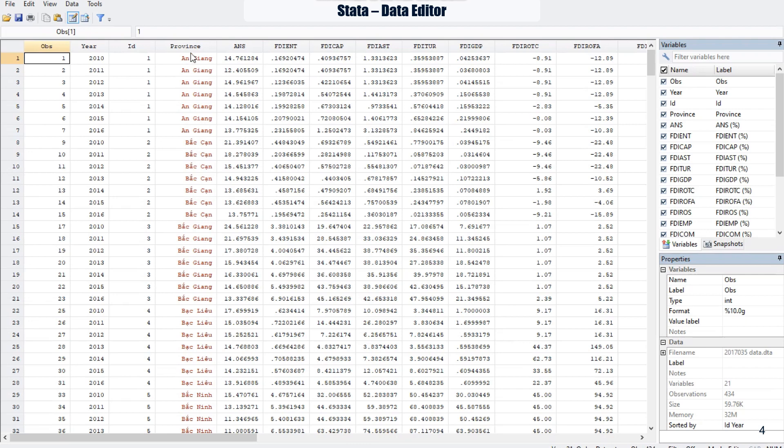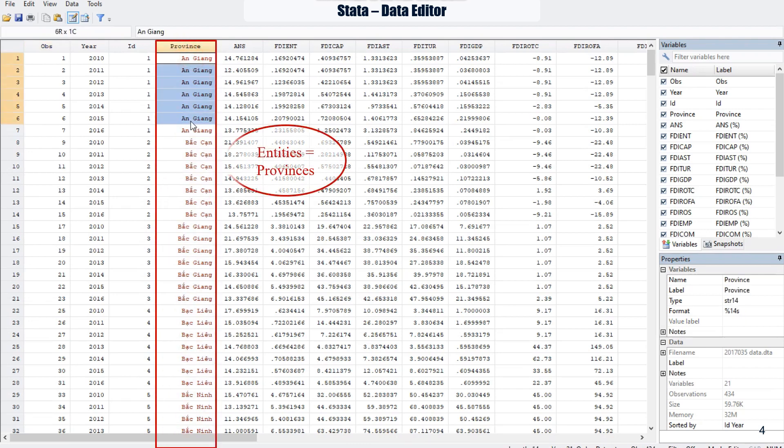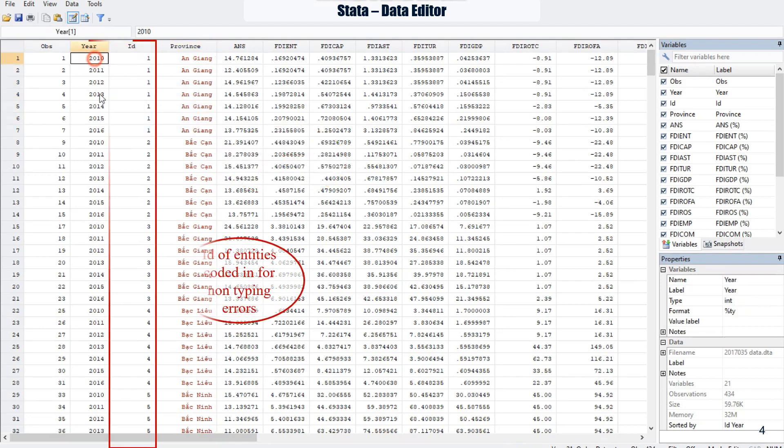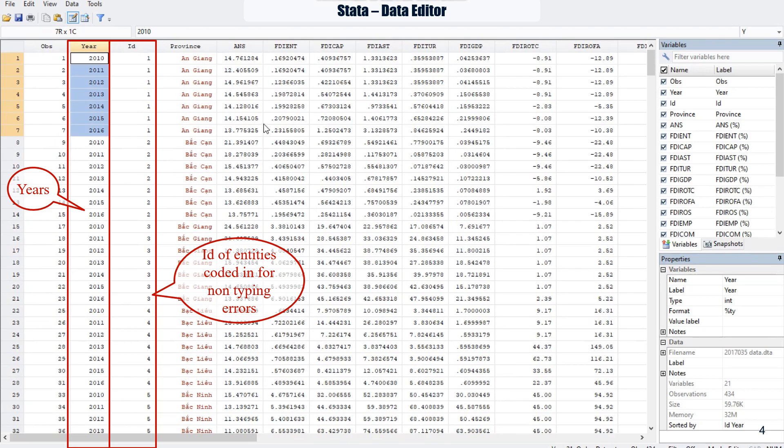Here is our panel data that we used in our article published in 2019. In this sample, ID represents the entities as Vietnam provinces that we code them in number and year represents the time variable, T.